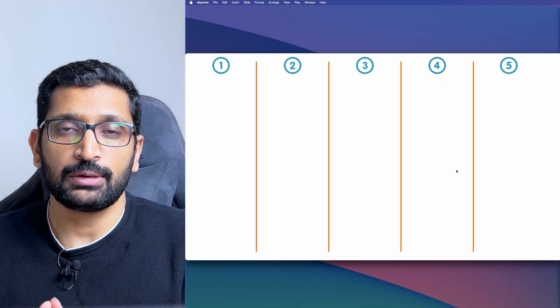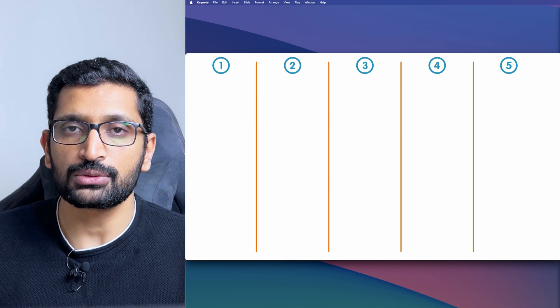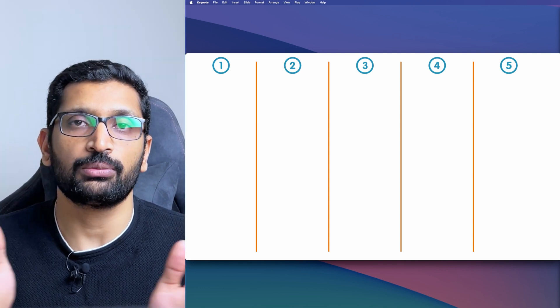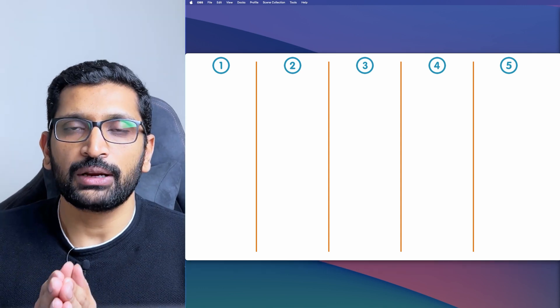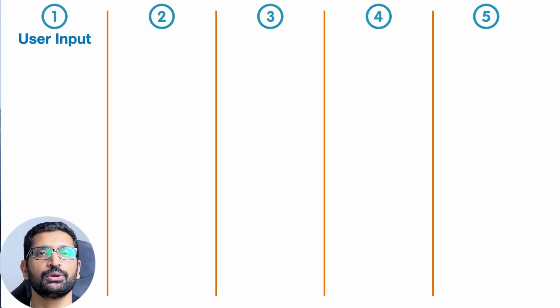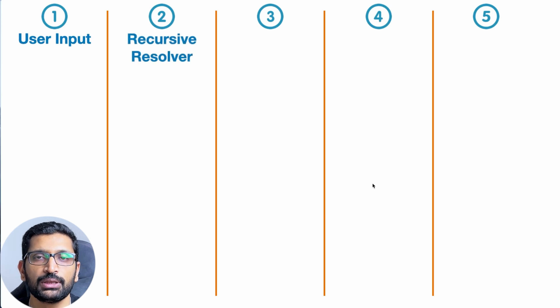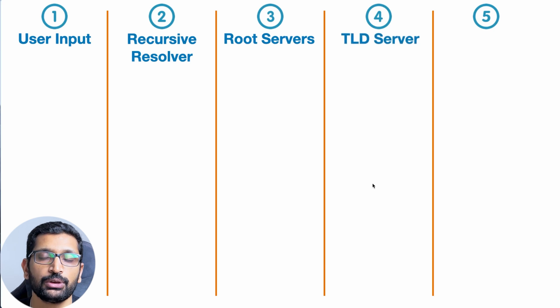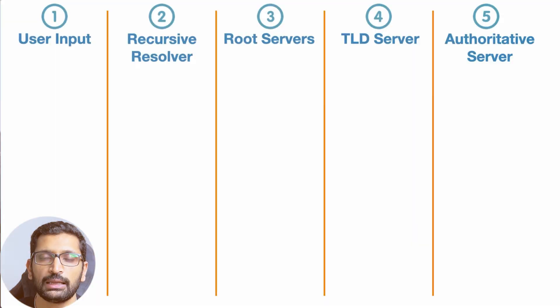There are a total of five steps from where you enter the URL in the browser until you access the website. Let's break down all the steps individually and see how domain name resolution works. Step one is user input where the user inputs the URL. Step two is the recursive resolver. Step three is the root server. Step four is the TLD server, also known as the top level domain server. And step five is the authoritative server.